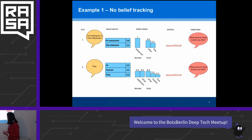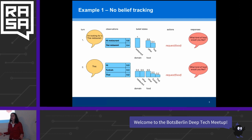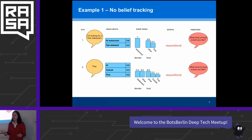This time the user simply says 'Thai,' which again can be misrecognized as 'high,' or perhaps 'Turkish,' and only with very small probability is 'Thai.' The key point is: if you don't do any belief tracking, you completely forget about what happened previously. Now we are not sure anymore that the user wants a restaurant, 'Thai' has the least probability, and the system would ask the same question again — which is particularly annoying to users.